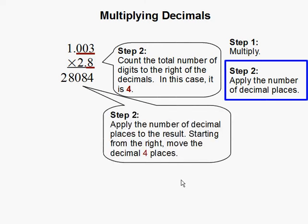Step 2 continuing on: Apply the number of decimal places to the result. Starting from the right, move the decimal 4 places. Since there are 4 digits to the right of the decimal, we're going to apply 4 digits to the right of our resulting answer.